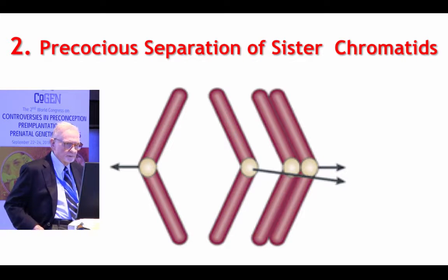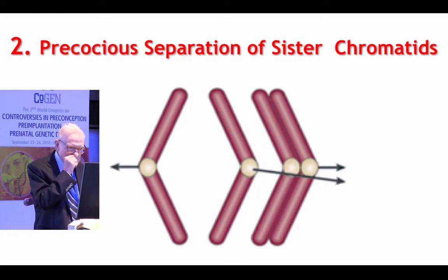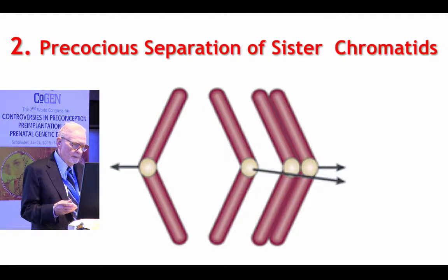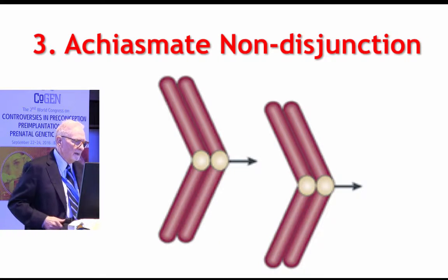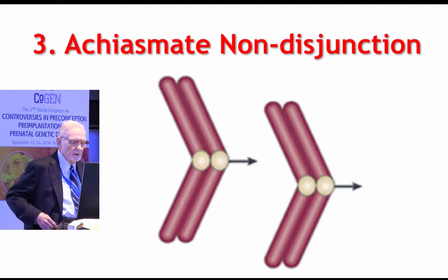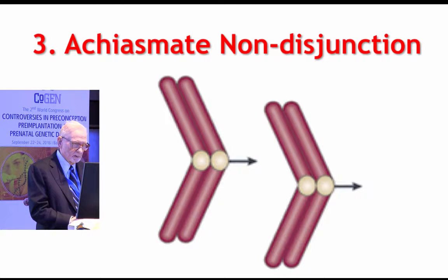The second mechanism, referred to from time to time, is precocious separation of sister chromatids, in which instead of the separation of the centromeres, one member of the pair separates and acts independently, going to the same pole as the other homologous chromosome. The third mechanism for creating aneuploidy is referred to as achiasmate non-disjunction, in which there is no crossing over and both homologs move in the same direction.